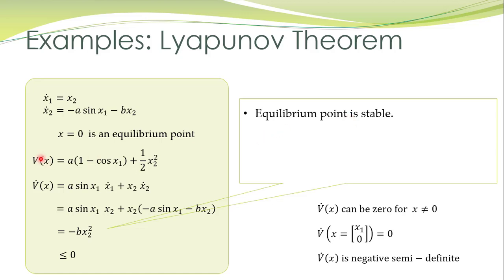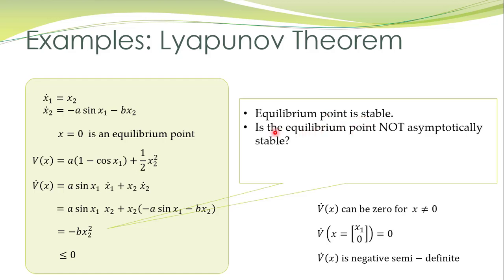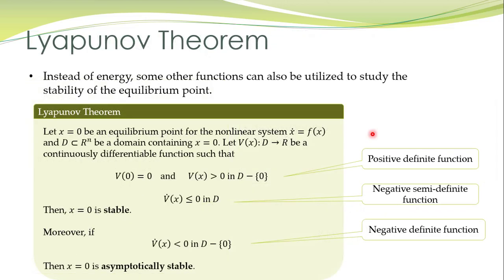We have taken a positive definite function, computed its derivative, and that derivative came out to be negative semi-definite — not negative definite. Therefore the equilibrium point is stable. Now the question is: is the equilibrium point not asymptotically stable? To answer this, we come back to the statement of Lyapunov theorem.